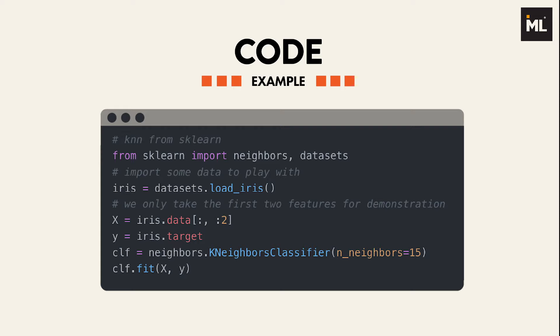We use the famous IRIS dataset and only take the first two features for demonstration purposes. The K-nearest neighbor algorithm is from sklearn and is self-explanatory. I encourage you to try it yourself with different parameters.